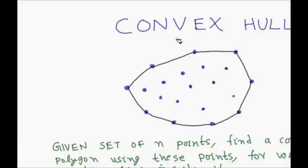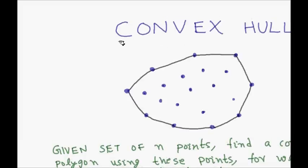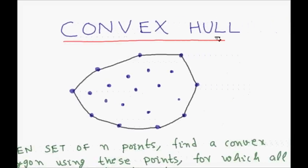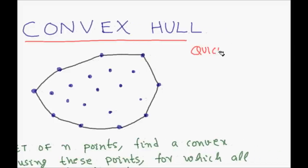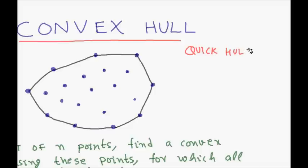In this lecture, we are going to learn about a problem known as convex hull. We will first cover the definition, then a brute force algorithm to find a convex hull. Since it has very high complexity, we will look at a divide and conquer based method to find the convex hull in theta of n log n, known as the quick hull algorithm.